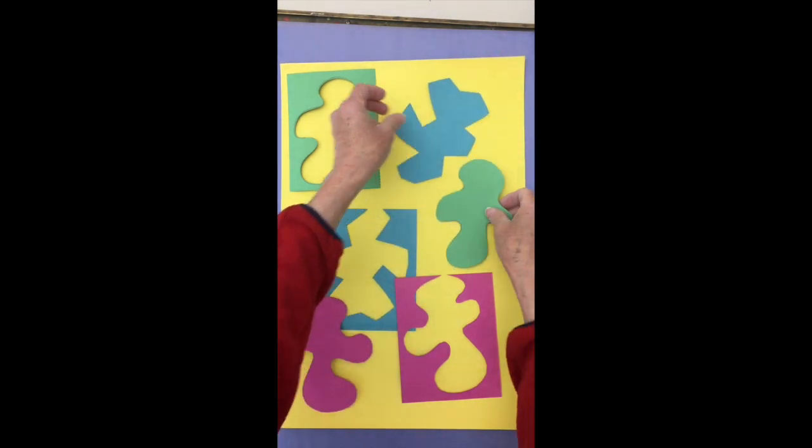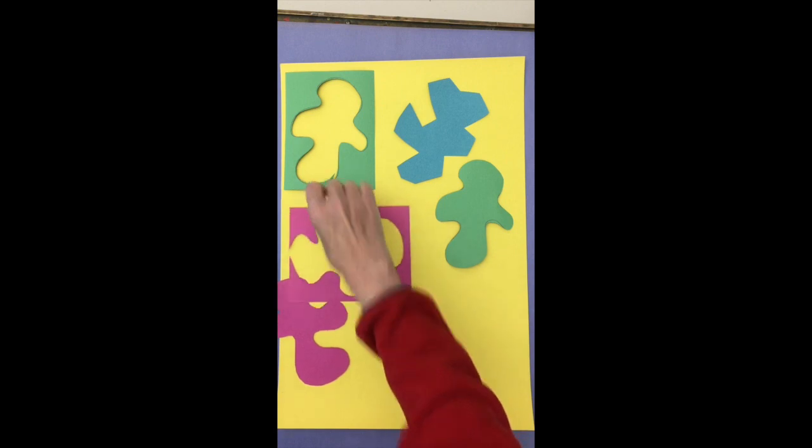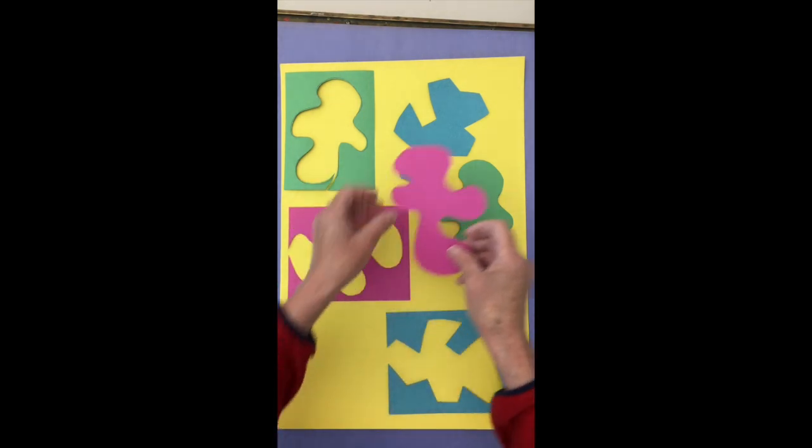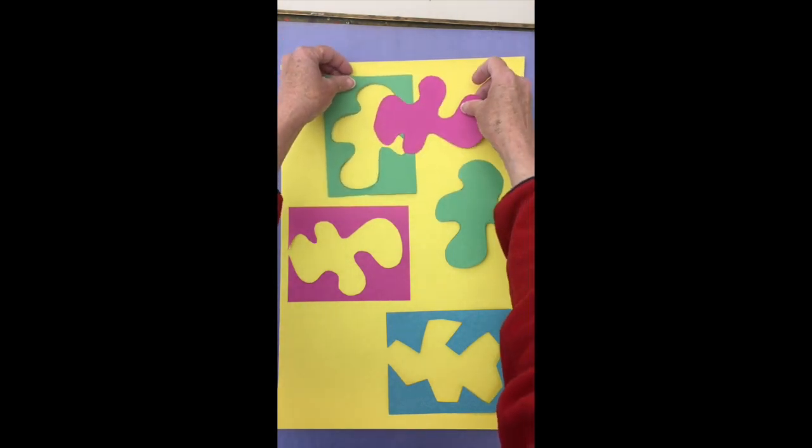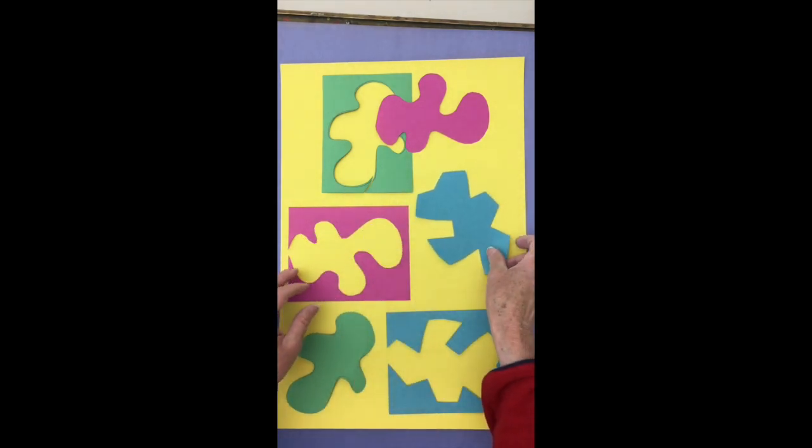I am now going to do what Matisse liked doing. I'm going to keep rearranging my shapes until I get a design that's pleasing to me. I'm trying my shapes and my rectangles in all different ways. That looks good.